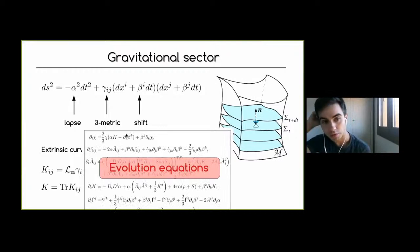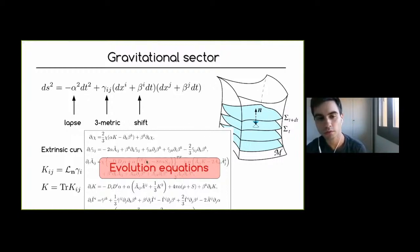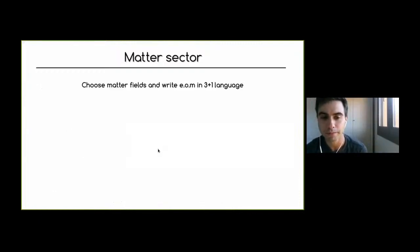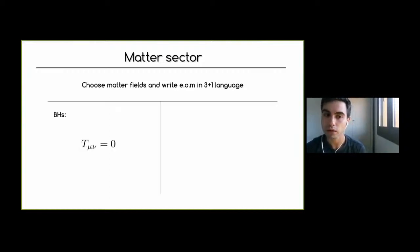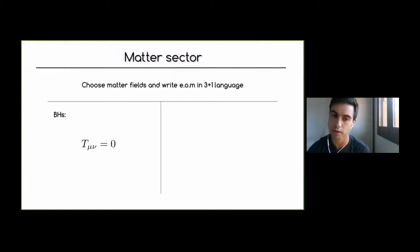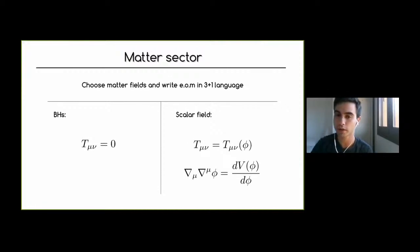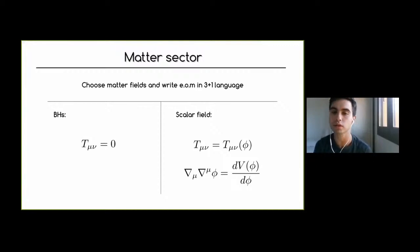Projecting the equations into the hypersurface and the orthogonal direction gives evolution equations for the gravitational sector. Depending on what we want to study, we choose the matter sector accordingly. For black holes there is no energy-momentum tensor, so we only solve the gravitational equations. But for inflation with a scalar field, we need to choose an energy-momentum tensor and also solve the equations of motion for the scalar field.